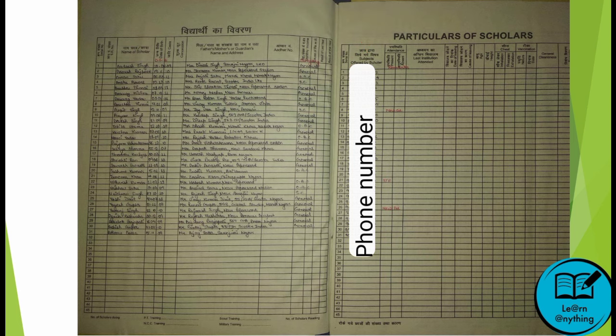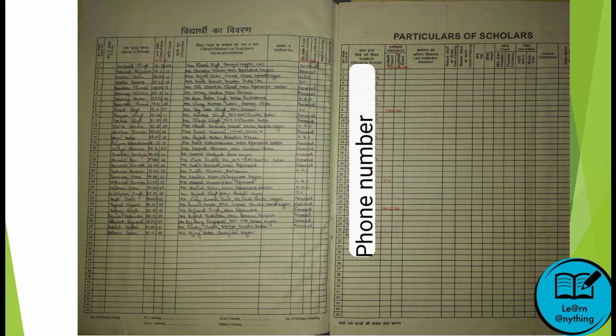The last column is called Remarks. If there are some children in your class who are new admissions, you write 'New Admission' in that column. Don't be afraid — some columns like category may not be present in every school, so you will ask your school which columns are required, or you can note these columns as shown.